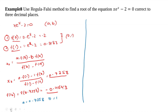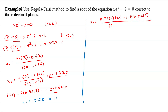Now we need to calculate x1, the second approximation, using the same formula: x1 is equal to 0.7358 into f(1) minus 1 into f(0.7358), divided by f(1) minus f(0.7358). Substituting the values, x1 is equal to 0.8395.